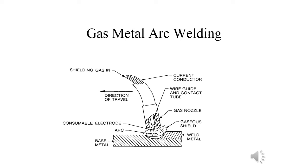Machine welding with GMAW is a mechanized process, but one or more controls require attention and adjustment by the operator. Automatic GMAW involves fully mechanized equipment such as robots, that require a minimum amount of observation and adjustment by the operator. However, most of the information we're going to cover is going to be restricted to the semi-automatic process.